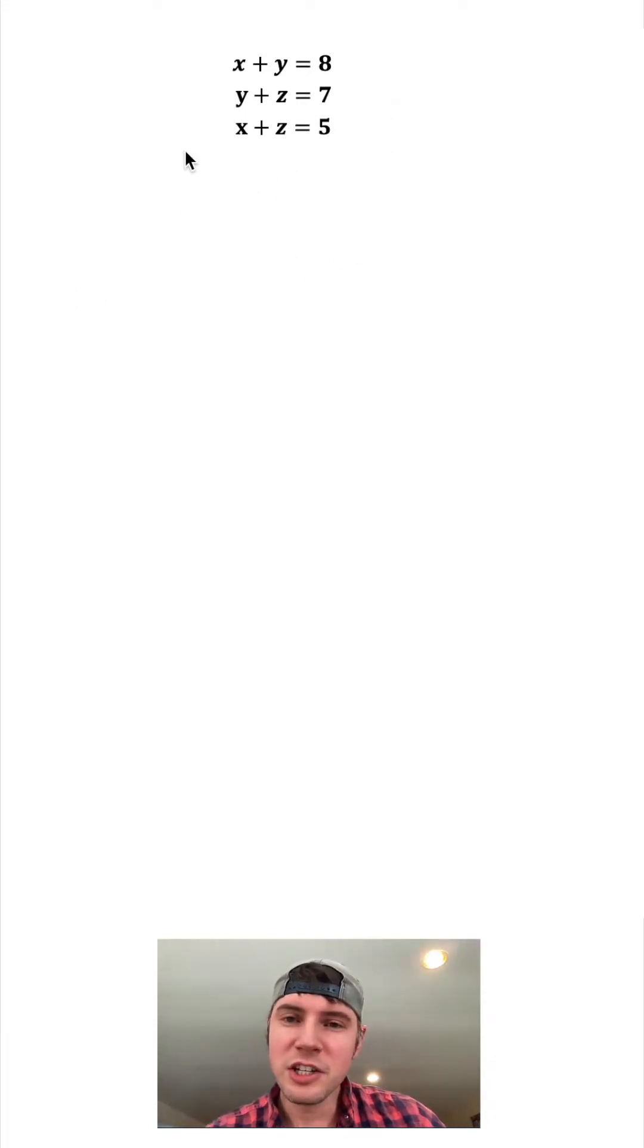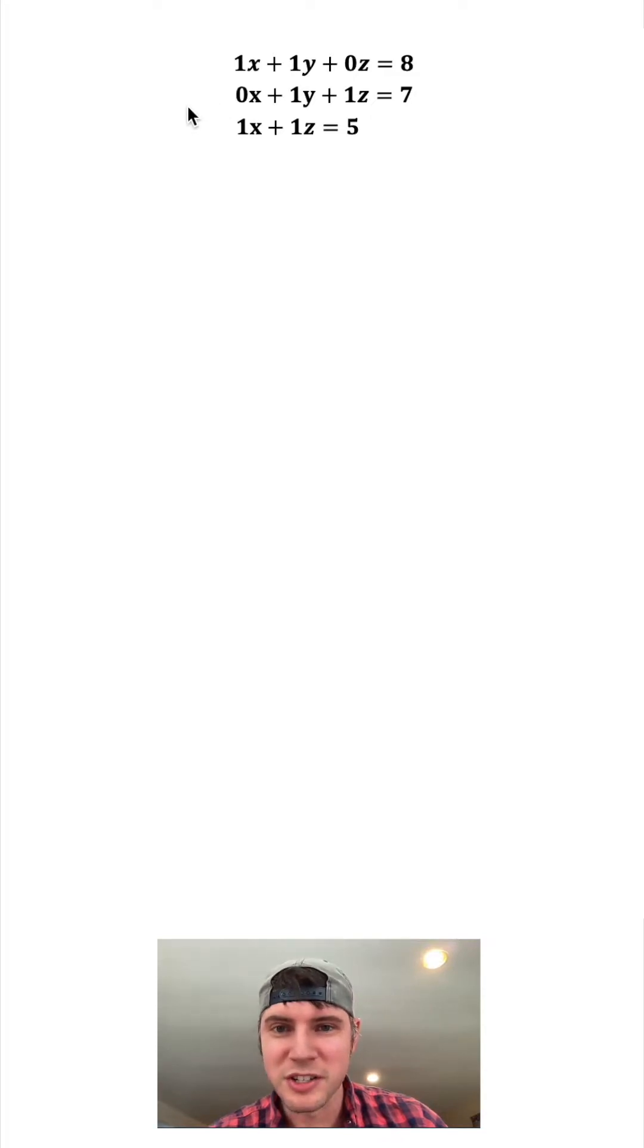There's a fun way to solve this. Let's give each of these a coefficient of one. We don't have a z in the top row, so let's add 0z. We don't have an x in the second row, so let's put 0x, and we don't have a y in the third row, so we'll put 0y.